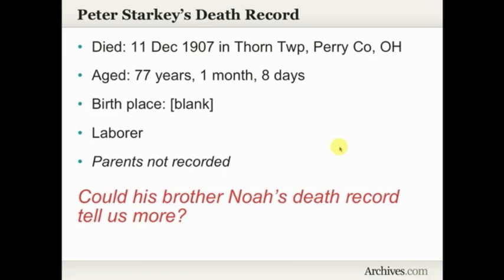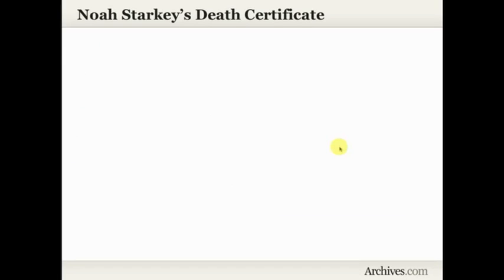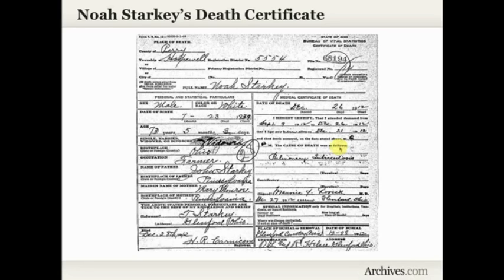So here we have Peter's death record. Could his brother Noah's death record tell us more? Noah died in Ohio in 1912, and by 1912 Ohio is keeping modern death certificates with a lot more information. On Noah Starkey's death certificate, we find that they have listed the name of the father and the name of the mother with her maiden name, listed as Mary Monroe. I'll want to use this as a clue, because this information is only as accurate as what the informant knew — but it's a clue I didn't have before. It wasn't on Peter's death record, but it is on his brother Noah's death certificate. So again, looking at that sibling is giving me a clue for further research.